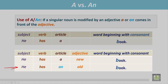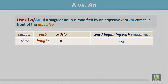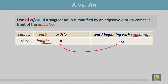Another example: He has an old book. The word book begins with the consonant B, but it is modified by the adjective old, and the word old begins with the vowel O. So we place AN before the adjective old. In another sentence: They bought a car. The word car begins with the consonant C and it is not modified by any adjective, so we place A due to the consonant.